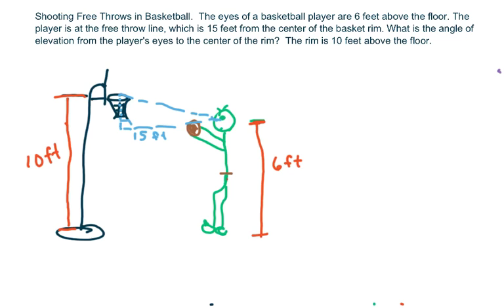So the eyes of a basketball player are 6 feet above the floor. The player is at the free throw line, which is 15 feet. Now this is not drawn to scale - the 15 feet looks smaller than the 10 feet over here, but just know it's not drawn to scale.